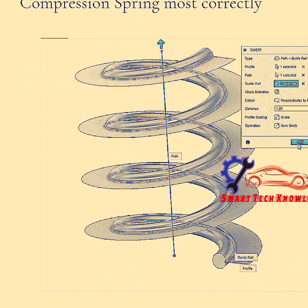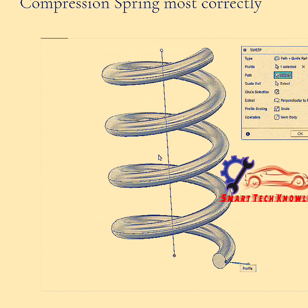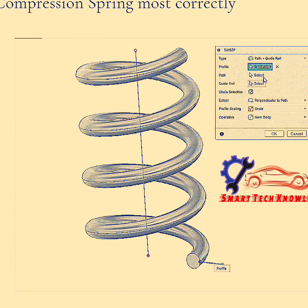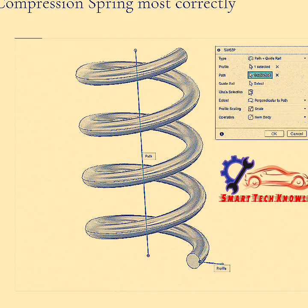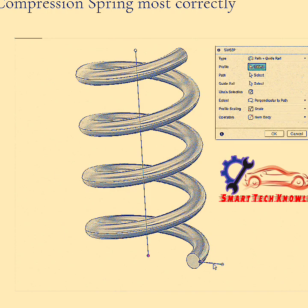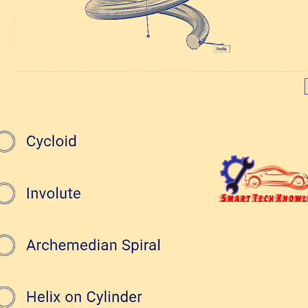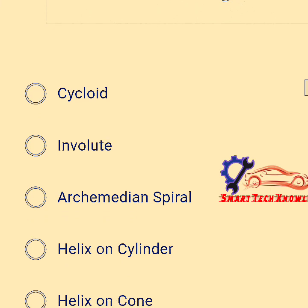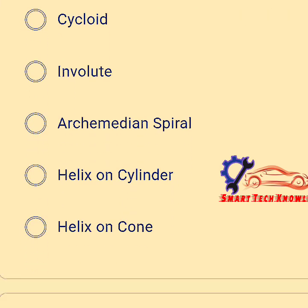Next one: select the curve which represents this compression spring. If you see it in the animation, it's clearly visible, it is a helix on a cylinder with a different number of turns. So the option is helix on cylinder as application of helical compression spring.